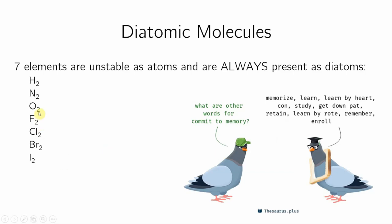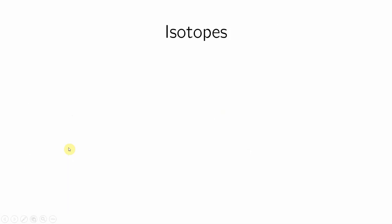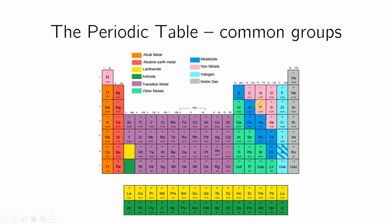This just happens to be that these are all the group 7 guys: F, Cl, Br, and I. That's a nice thing. And they're attached. If I look at the periodic table, it's this.